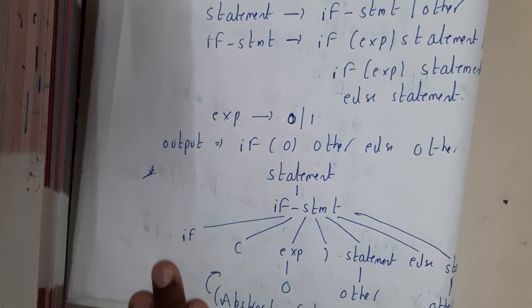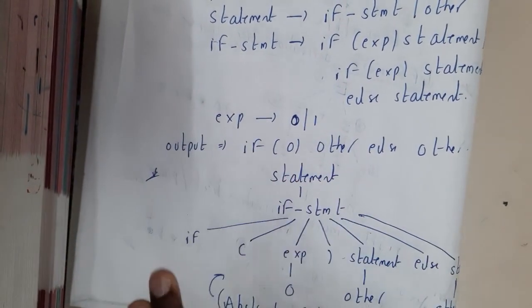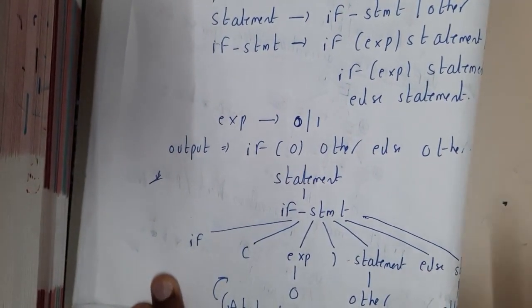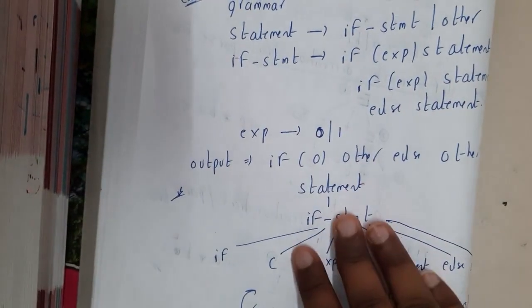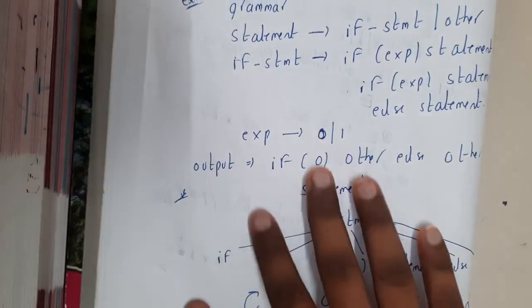Just to substitute other in statement, we are having other. So this is nothing but the abstract syntax tree. Basically, an abstract syntax tree is nothing but the representation of code in terms of a tree.